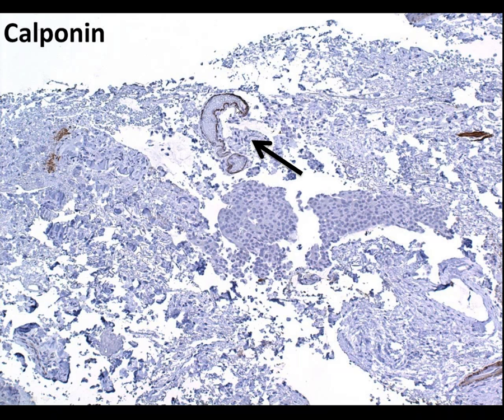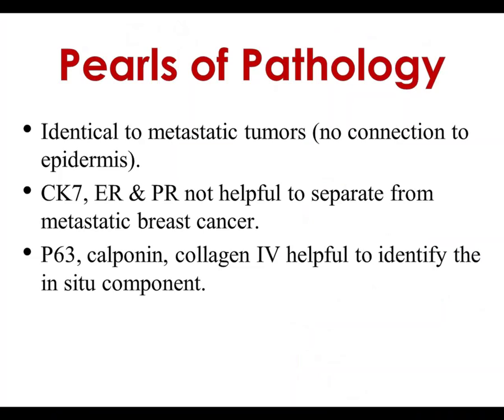These tumors can look like metastatic tumors on histology, so you cannot always make the distinction by histology alone. In my opinion, call your clinician and you can save money on immunohistochemistry. Remember CK7 is not going to be helpful — both primary cutaneous tumors and breast cancer can be positive. The same applies to estrogen receptors and progesterone receptors — these markers can be positive in both neoplasms. What is helpful is if you have a preserved myoepithelial layer around the nests of atypical cells — you can use markers like p63, calponin, or collagen IV to identify this in situ component. Thank you very much for your attention; if you have any questions please let me know.